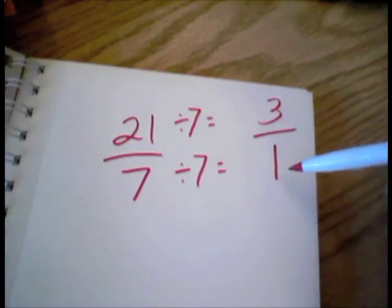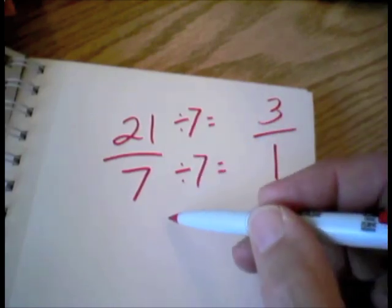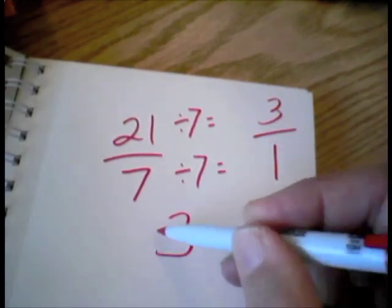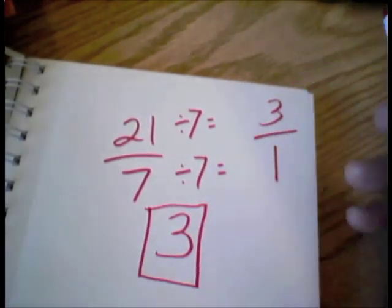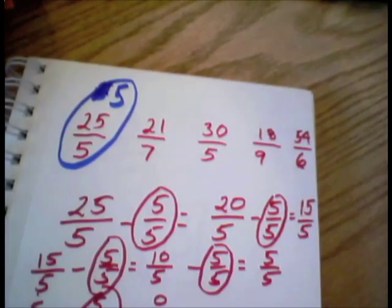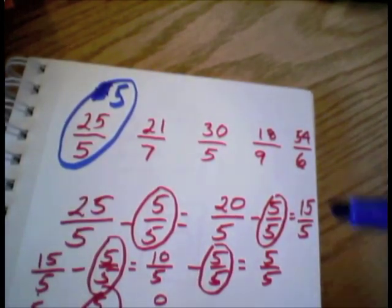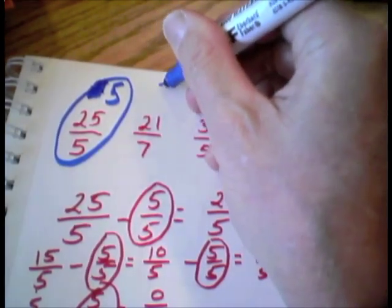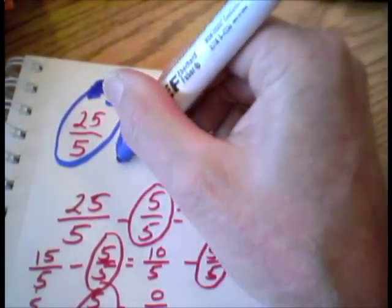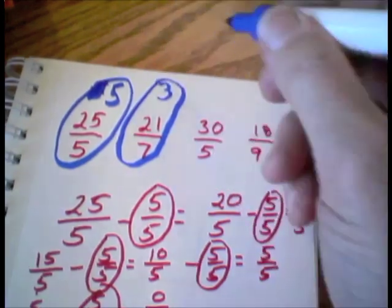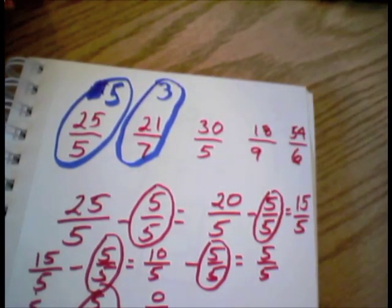So we end up with 3 1ths, or in other words, 3. Okay, so 21 7ths. Do you have a question or comment, Havana? I have a question. Great, could you hold on to that thought and share it at the end of the problem with us?